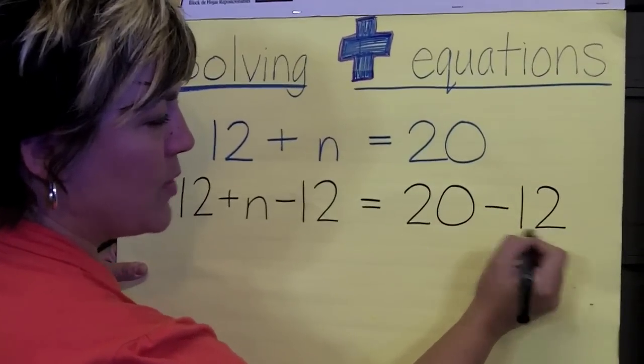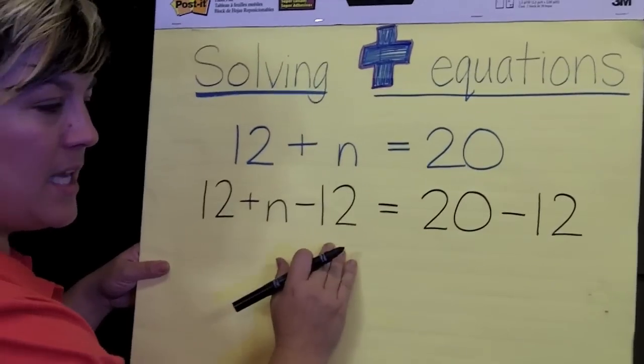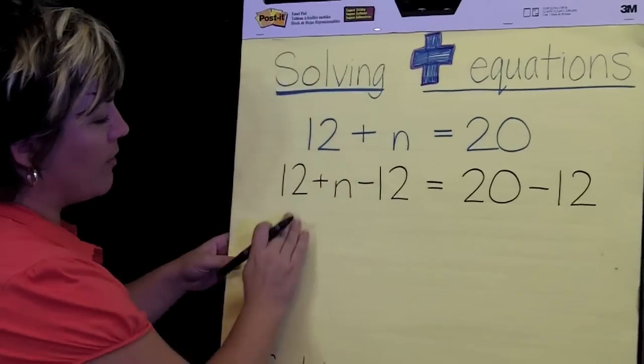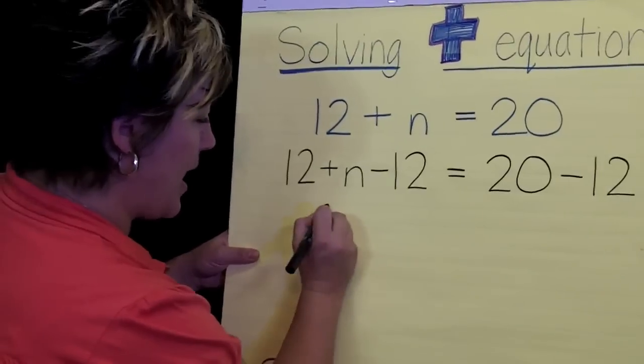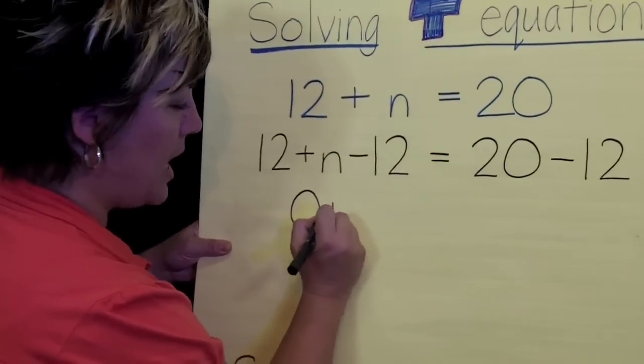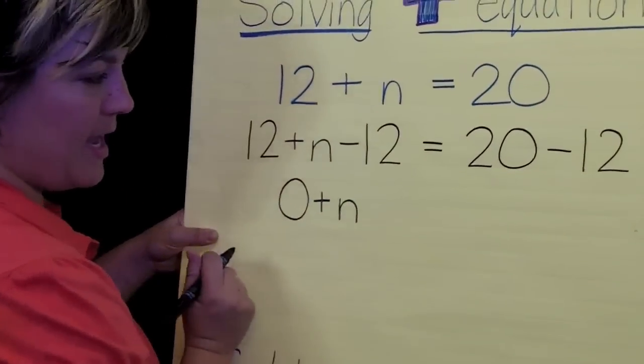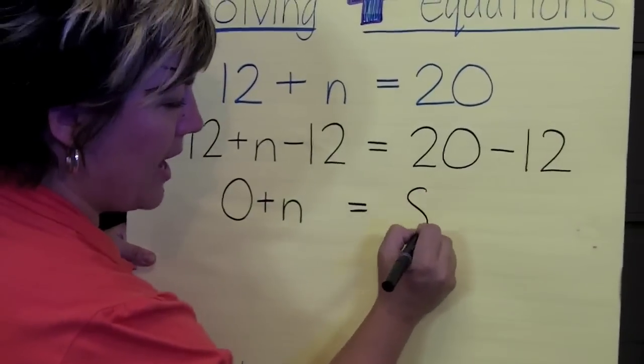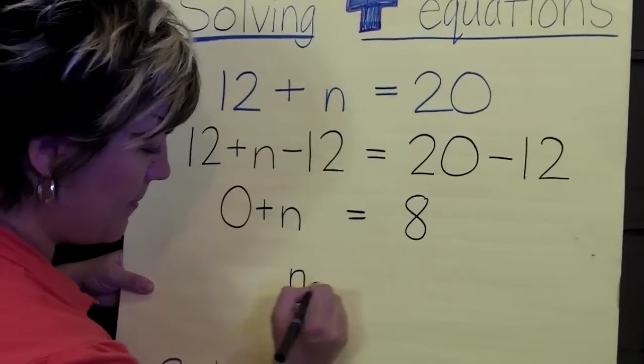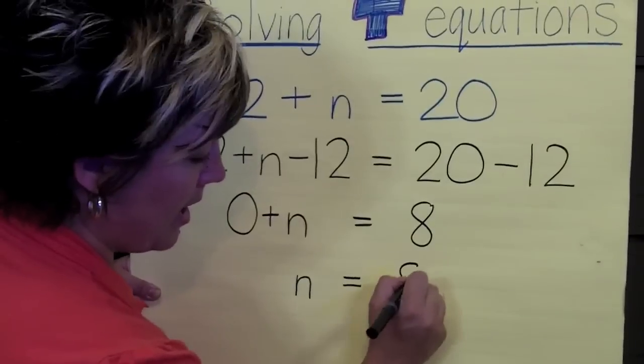The reason that I subtract 12 on both sides is because I need to keep my balance equal. Let's go ahead and solve. 12 minus 12 is going to be 0. So I'm going to have 0 plus the n that's there equals 20 minus 12. That's your 8. So you end up saying n equals 8.